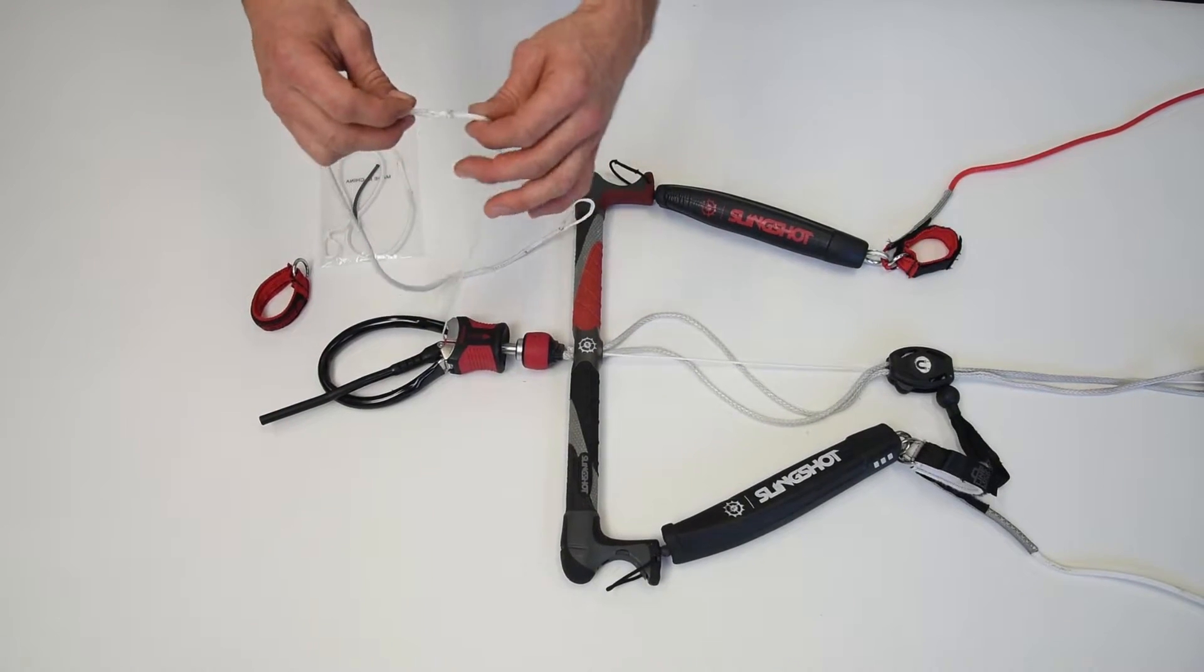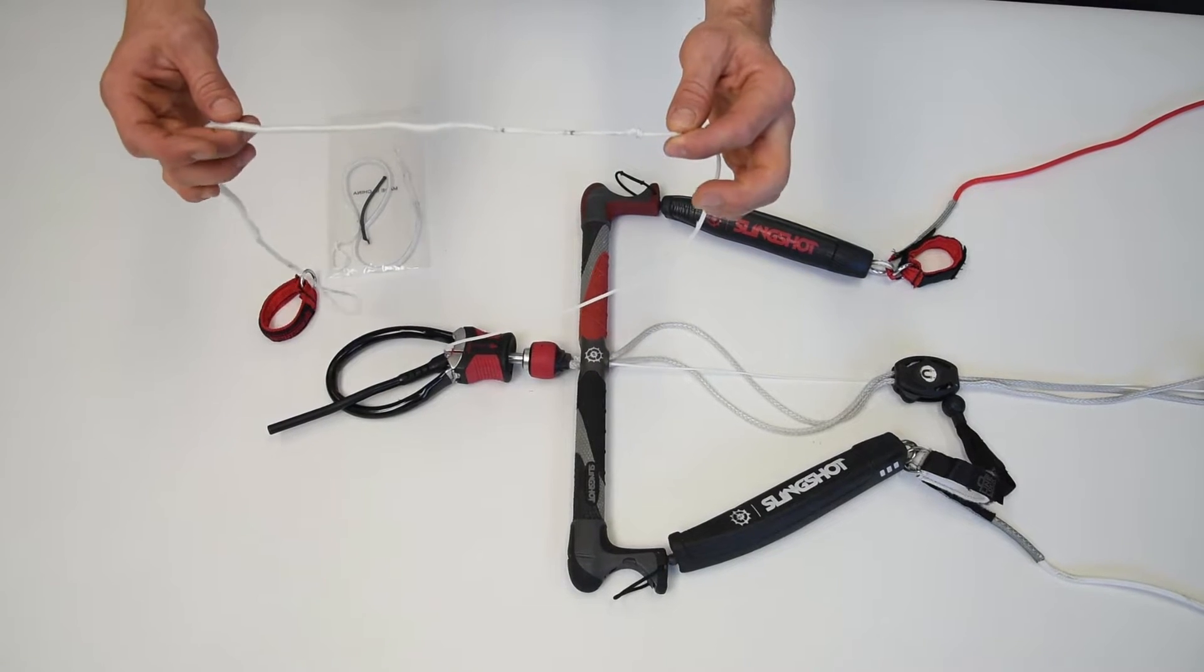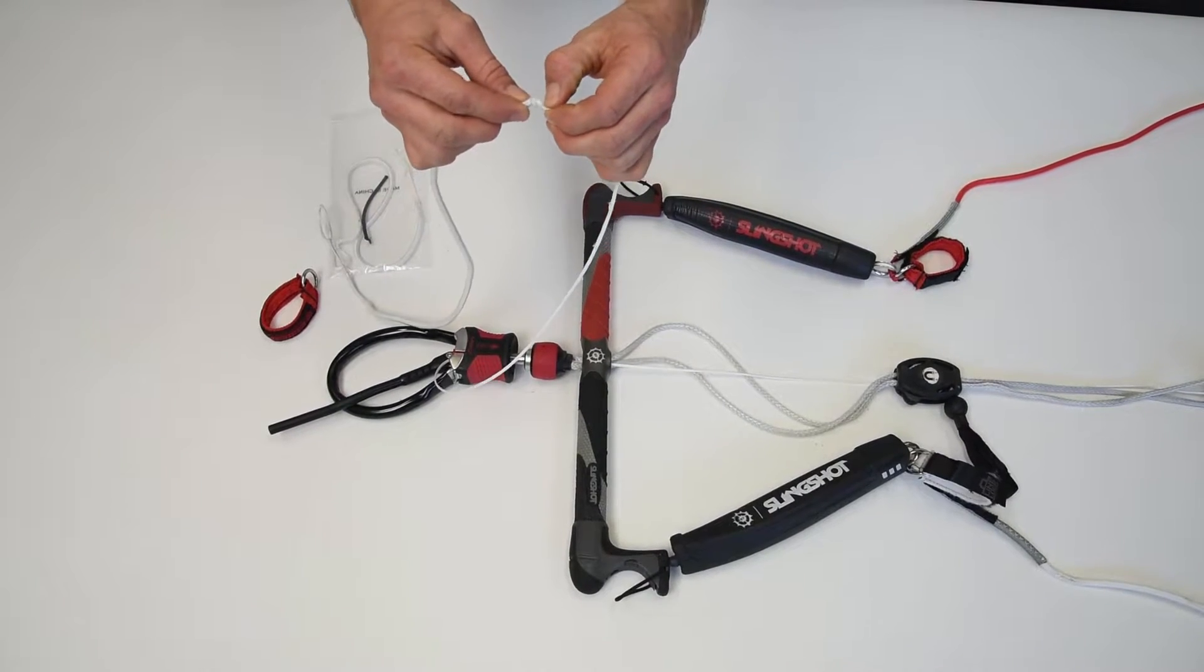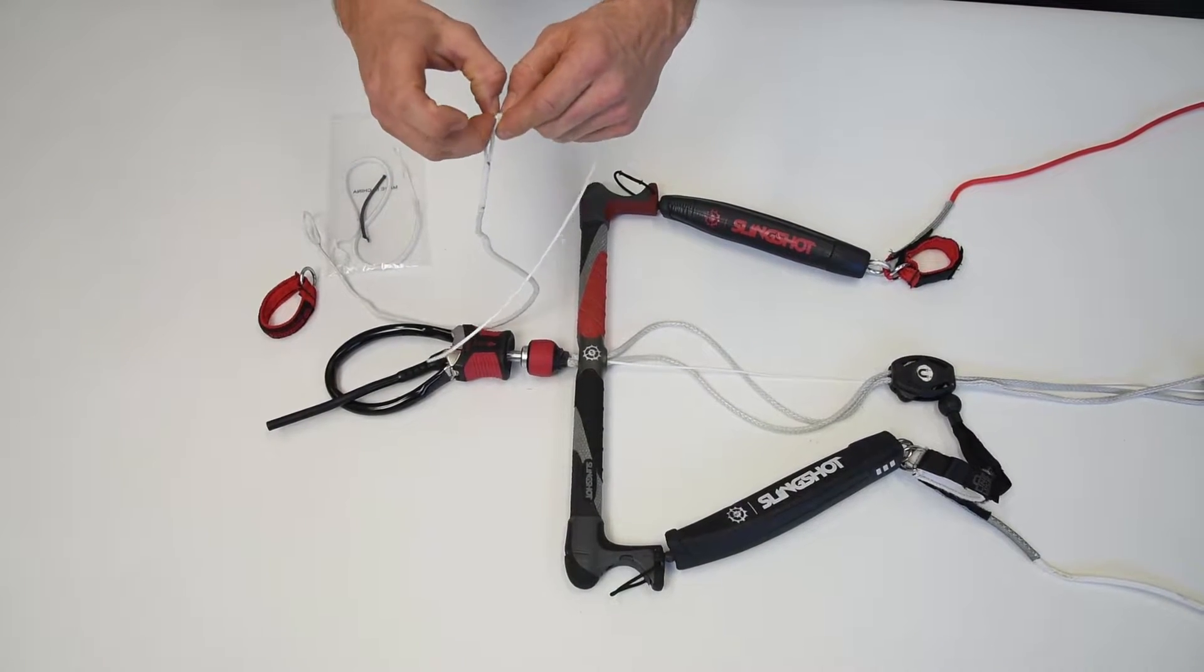Then separate the bungee from the center line. If the knot is tight you will need to push on both ends and wiggle it until it loosens. Discard the worn out bungee.